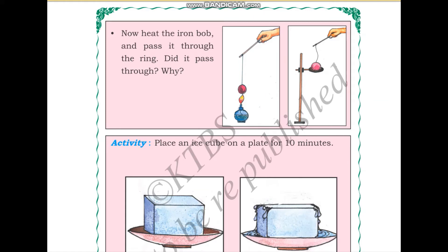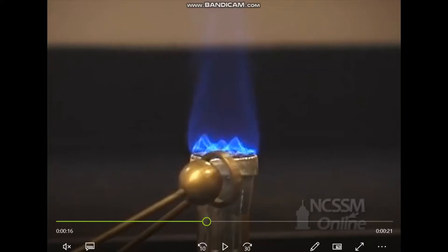Next, heat the iron bob and pass it through the ring. Did it pass through the ring? You can see here in the second picture that the bob is not passing through the ring — it is getting stuck. Why did it get stuck? To understand this better, I will show you a video.